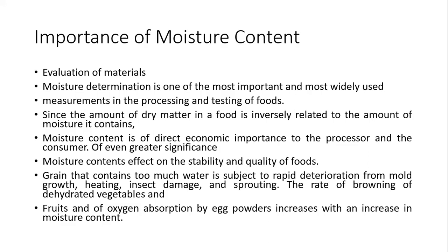We have already discussed the types of food on the basis of moisture content: stable, semi-perishable, and perishable commodities, distinguished on the basis of their moisture content. Since the amount of dry matter in a food is inversely related to the amount of moisture it contains — more the moisture, less will be the dry matter — moisture content is of direct economic importance to the processor and consumer. It also greatly affects the stability and quality of food.